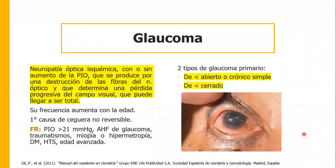Su frecuencia aumenta con la edad y es la primera causa de ceguera no reversible. Entre sus factores de riesgo están una presión intraocular mayor a 21, antecedentes familiares de glaucoma, traumatismos, miopía —asociada a glaucoma de ángulo abierto—, hipermetropía —asociada a glaucoma de ángulo cerrado—, diabetes mellitus, hipertensión arterial y edad avanzada.